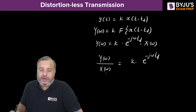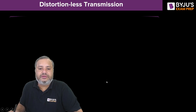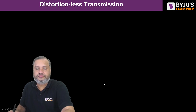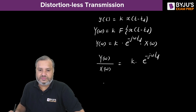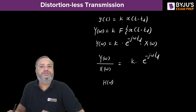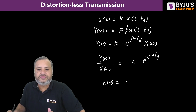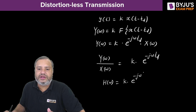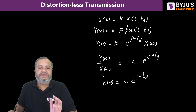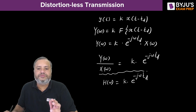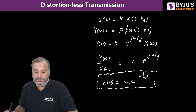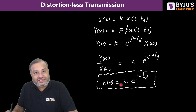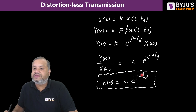Y(ω) divided by X(ω) is nothing but H(ω), which is called the frequency response. So the frequency response is H(ω) = k · e^(−jωtd). This is the frequency response of a distortionless transmission system. Here k is the amplitude scaling factor and td represents the amount of delay.